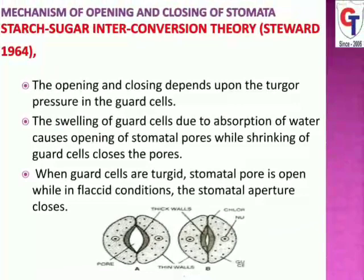In summary for starch-sugar interconversion theory: when stomata opening occurs, turgor pressure increases in the guard cell because starch is converted into sugar, and sugar has higher osmotic pressure. Therefore, endosmosis occurs and stomata remain open. During night time, stomata close because sugar is converted back into starch, osmotic pressure dramatically decreases, turgor pressure of the guard cell also decreases, and as a result the guard cell becomes flaccid, causing closing of stomata.